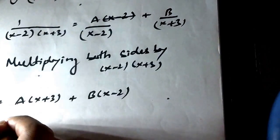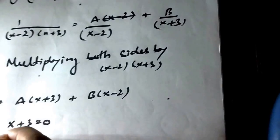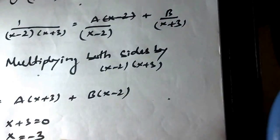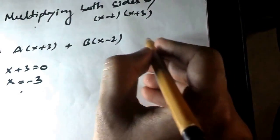Putting a factor x plus 3 equals to 0 and x is equal to minus 3 and then putting this in the equation.